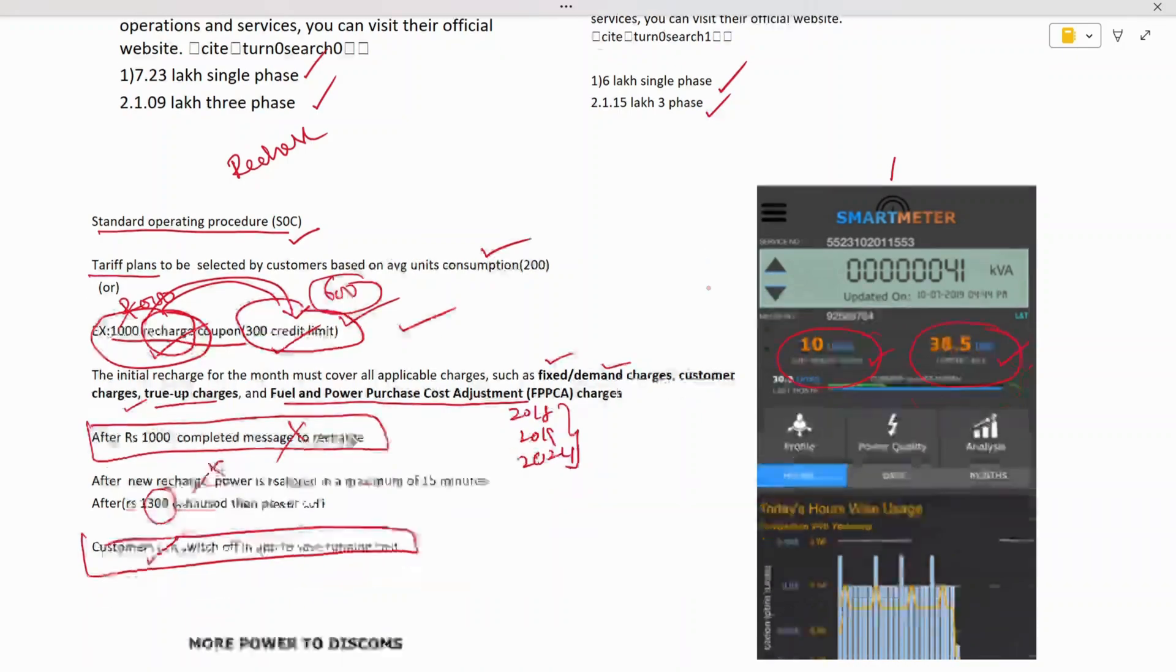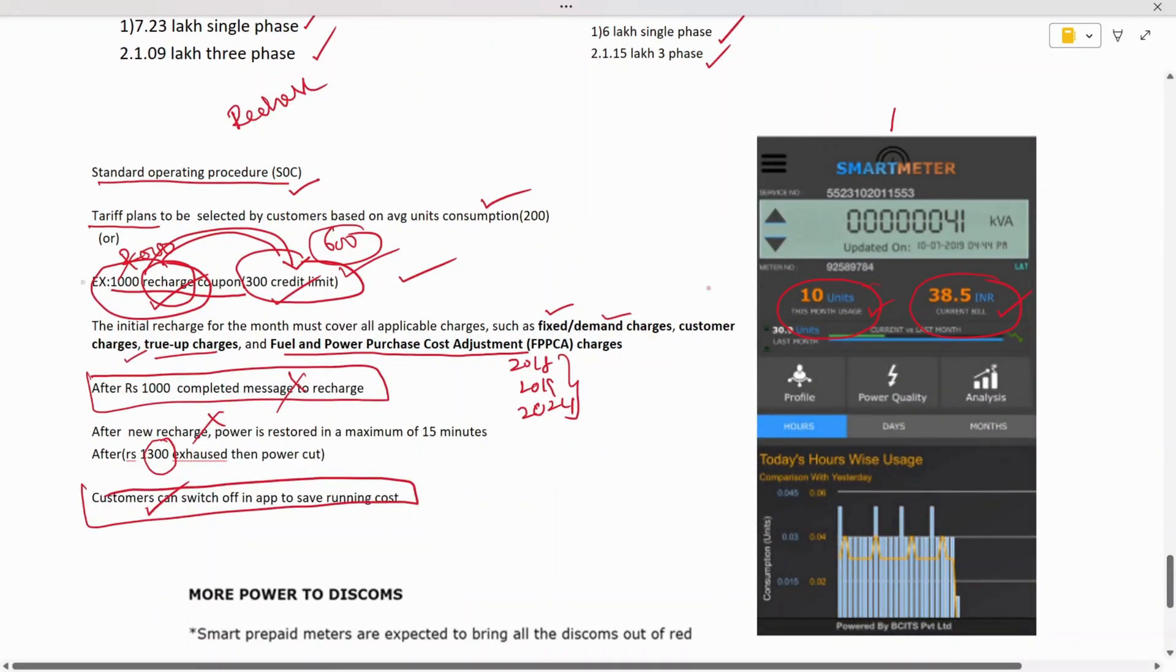Whenever the thousand rupees is completed, the power will not get disconnected, so you can use this credit limit. As soon as the thousand rupees is exhausted, you'll get a message that your balance has been exhausted and you need to recharge immediately. If you don't, the power will not disconnect and will use this credit limit. When you recharge, the credit limit will be reduced from your original recharge.